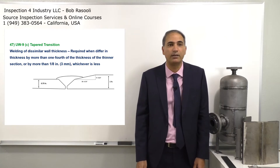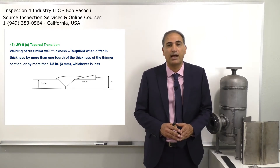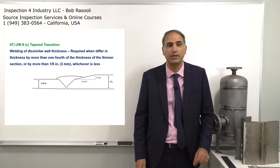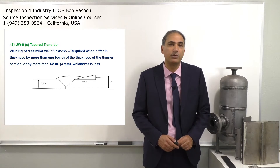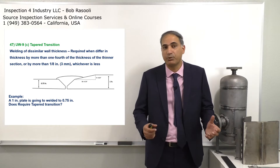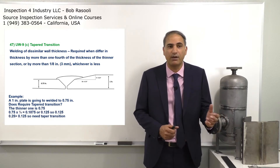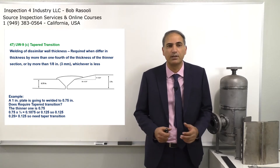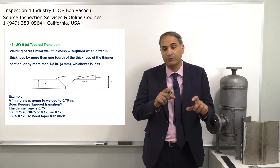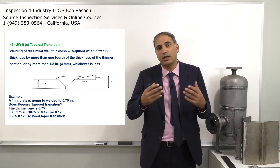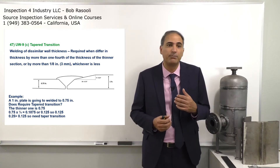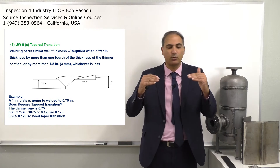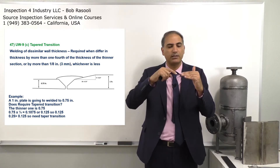As you can see, the plate in the left hand is 3/4 inch and the plate in the right hand is 1 inch — the difference is 0.25 inch. A 1-inch plate is going to be welded to a 0.75-inch plate. Does it require taper transition? The thinner part is 0.75 inch; one-quarter of 0.75 inch is 0.1875, and 1/8 inch is 0.125 — so pick 0.125. Since 0.25 inch is more than 0.125 inch, it requires taper transition. You can't just weld a sharp edge between the two.